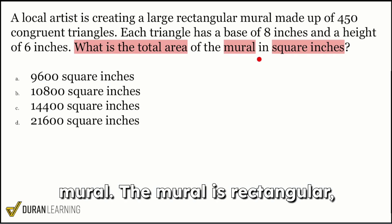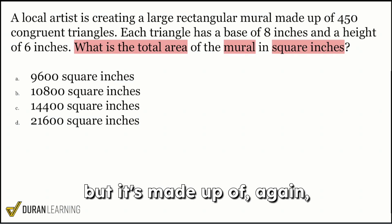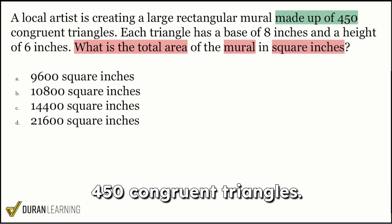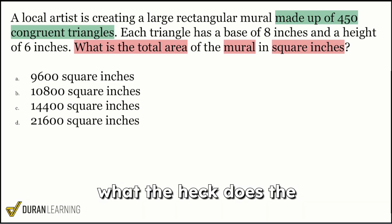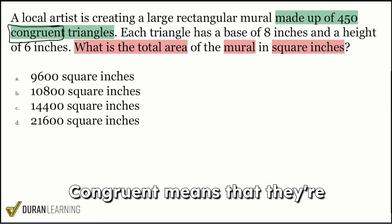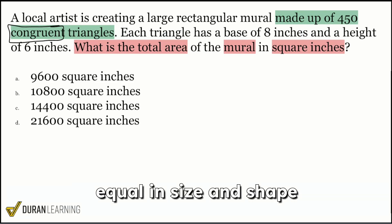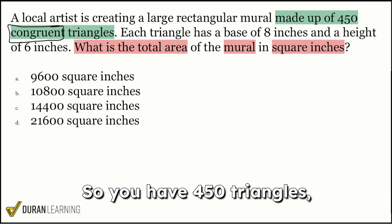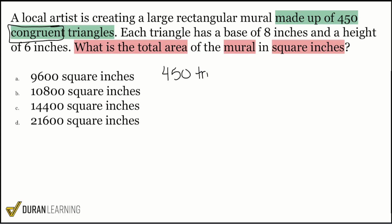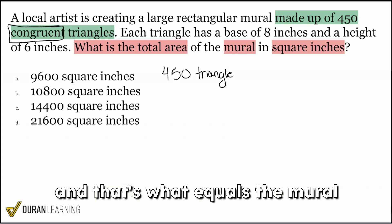we want the total area of the mural. The mural is rectangular, but it's made up of, again, 450 congruent triangles. So the biggest thing here is what the heck does the word congruent mean? Congruent means that they're equal in size and shape, right there. So you have 450 triangles, and that's what equals the mural, right there.